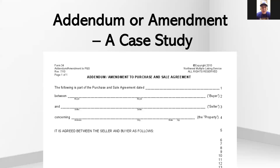So as a case study, I wanted to use one that we recently had where the original agreement agreed upon by buyer and seller had a Form 34 that stated that the seller was to remain in occupancy for an additional 30 days beyond closing. As the transaction was moving along, there was an amendment signed by buyer and seller that set forth a specific date for occupancy change that did not equal the 30 days.